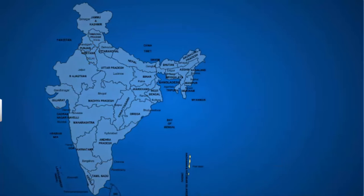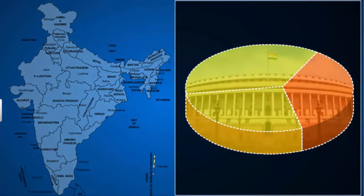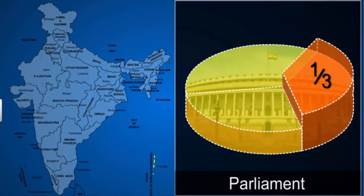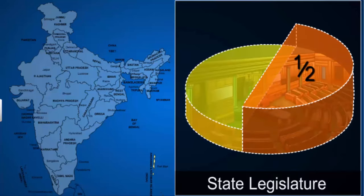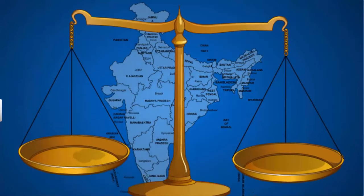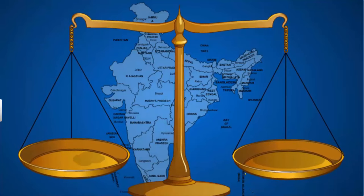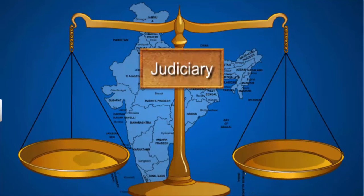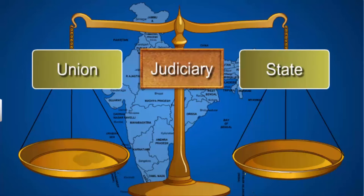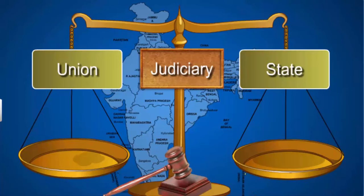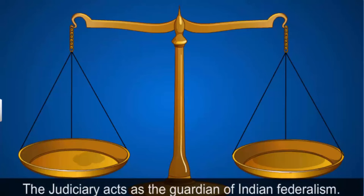It is very difficult to make changes in India's power-sharing arrangement, as any change has to be approved by a one-third majority in both houses of parliament and then by the legislatures of half of the total number of states. Another important aspect that makes India a federal country is the judiciary. The judiciary administers both union and state laws, and in case of any dispute about the division of power, the High Court and Supreme Court make a decision, acting as the guardian of Indian federalism.